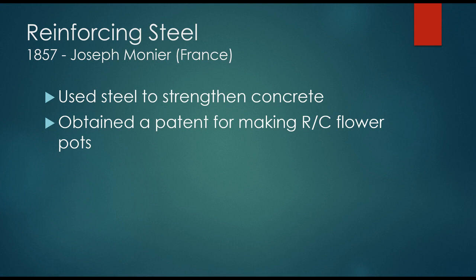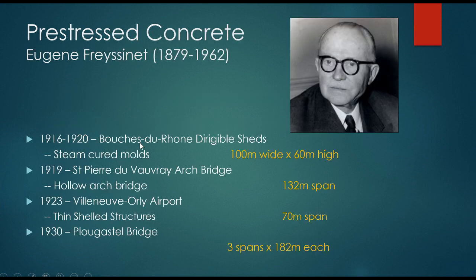The next major milestone was the inclusion of reinforcing steel, developed by Joseph Monier in France in 1857. He used reinforcing steel to help strengthen concrete — not building beams or structures, but actually making reinforced concrete flower pots, using steel as a wrapper to help hold the particle shapes together against the stresses from the soil.